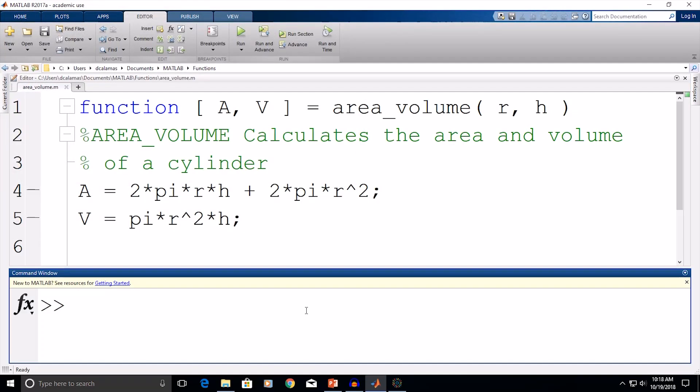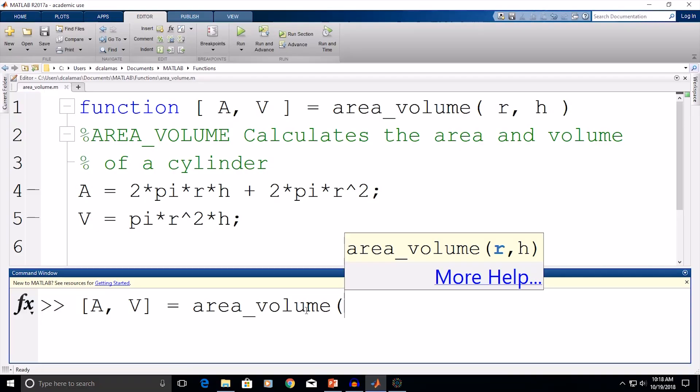And now I want to run this function. So, I'm going to provide the function, the input arguments of the radius and the height. Now, again, if you recall from our previous example, function variables are stored locally. And so, if we want to actually use these variables in the future, we need to tell MATLAB to store them. So, we have two variables that I want to store, area and volume. And now I'm going to call the function by typing in the function name and providing the two input arguments, which are the radius. So, let's say it's 2, and the height, let's say it's 20. And then we'll click enter.